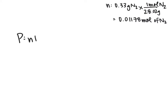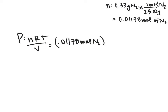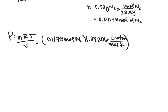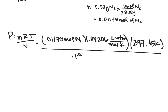Pressure equals NRT over V. N is 0.01178 moles of N2, R is 0.08206 liters atmospheres per mole Kelvin, temperature is 297.15 Kelvin, divided by our volume of 0.144 liters. Plugging this into our calculator, we get 1.99 atmospheres.